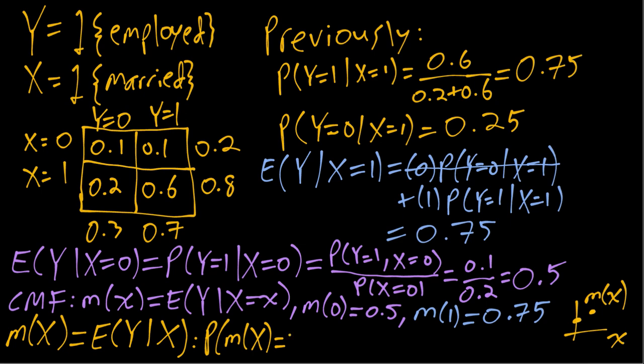Specifically, the probability that m of X equals 0.5—well, if X is zero, then m of X equals 0.5. So the probability that m of X equals 0.5 in this example is the same as the probability that X equals zero.